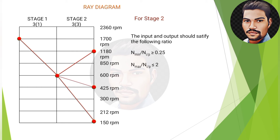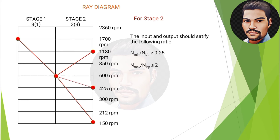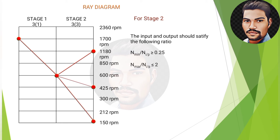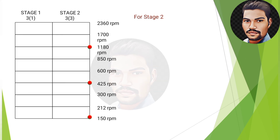We verify the input speed using the criteria: N_min / N_input ≥ 0.25 and N_max / N_input ≤ 2. Here, 150/600 = 0.25 ≥ 0.25 and 1180/600 ≈ 1.97 ≤ 2, so the input speed of 600 rpm satisfies the criteria and is acceptable for gearbox design.